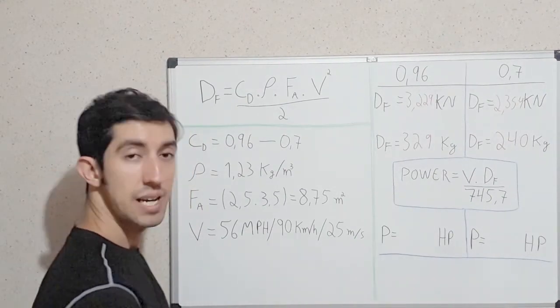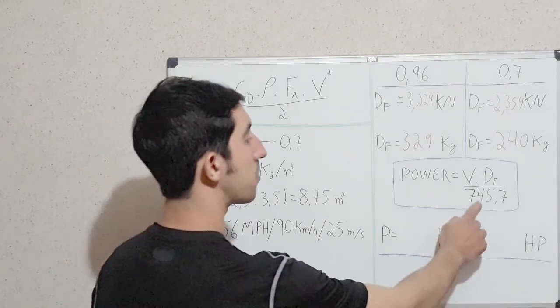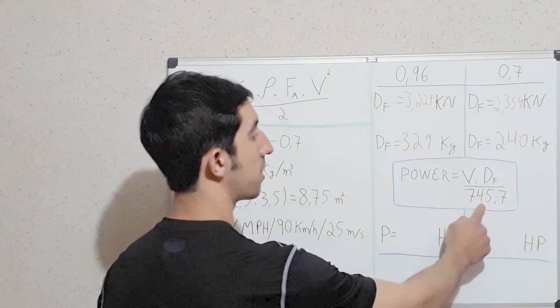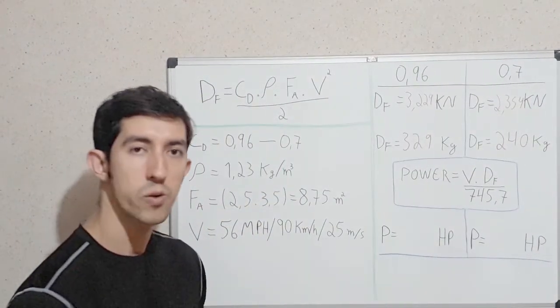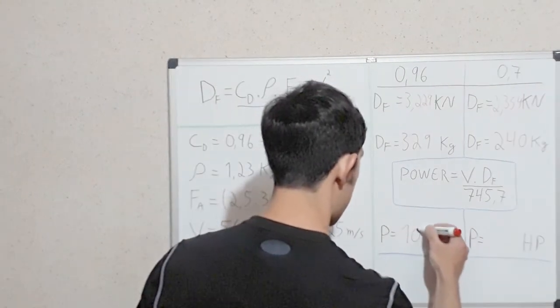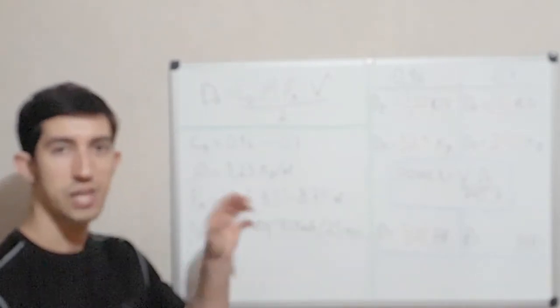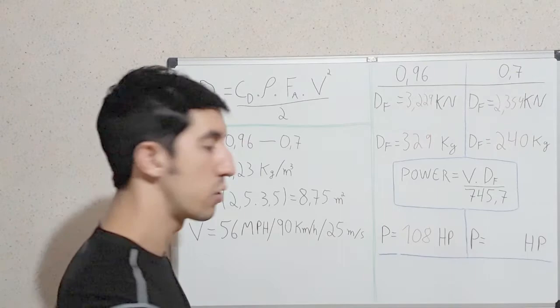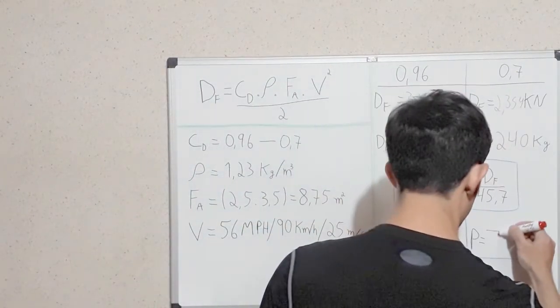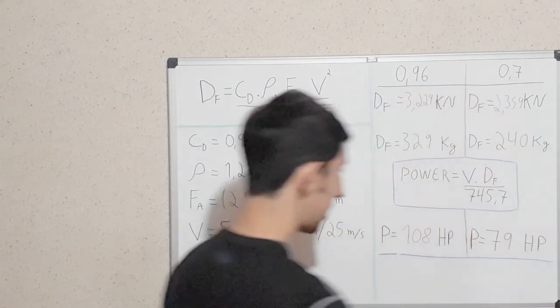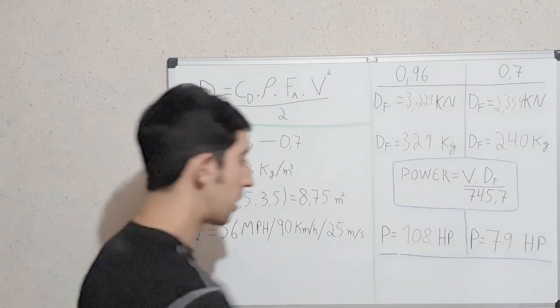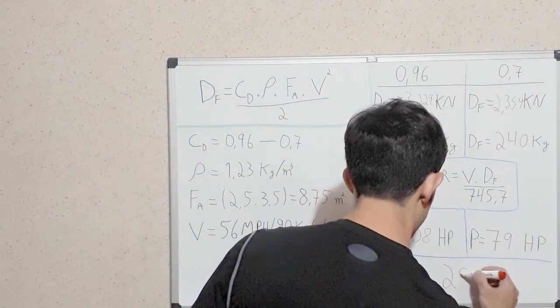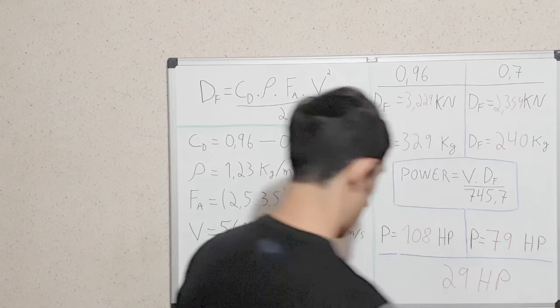So, to convert that in horsepower, we divide by 745.7 to get in horsepower. So, with no fairing, we have 108 horsepower only to get through the air. If we put the fairing, we will get 79 horsepower to go through the air. It's a difference of 29 horsepower.